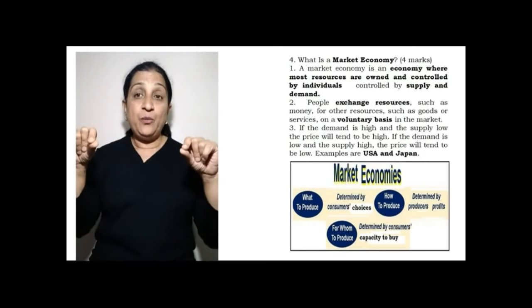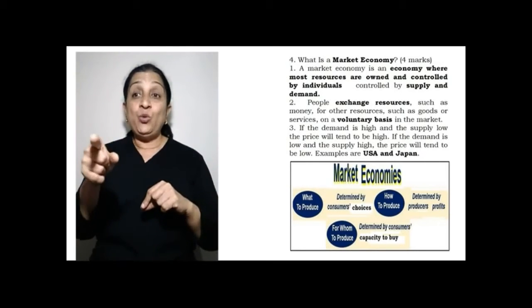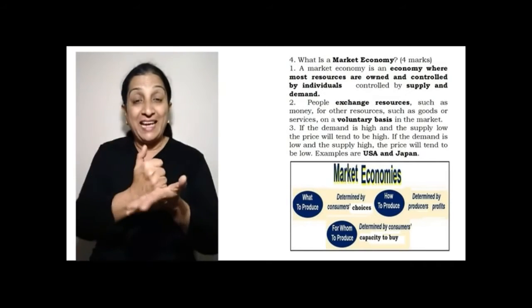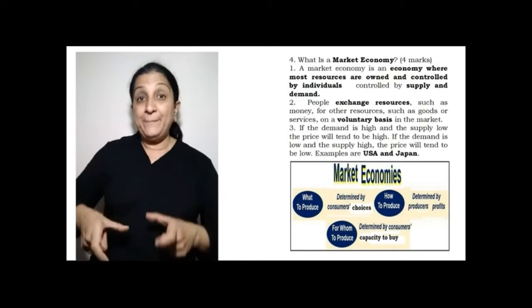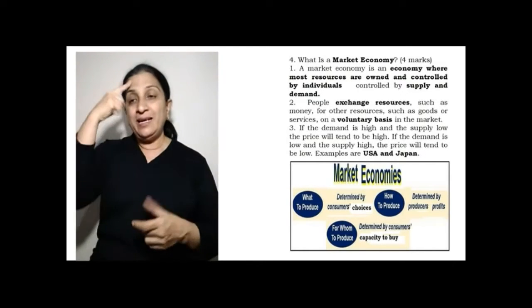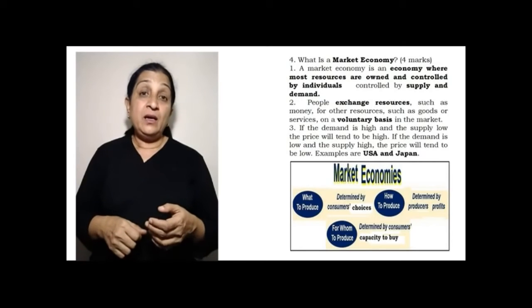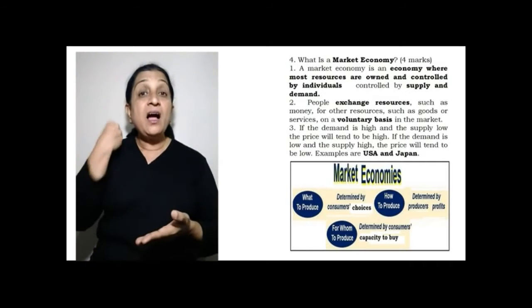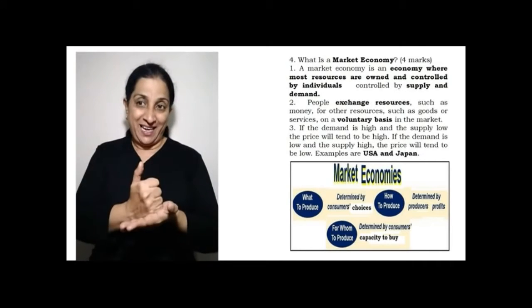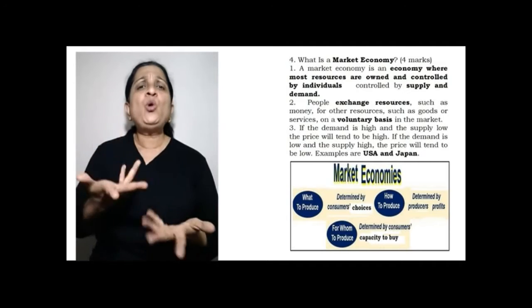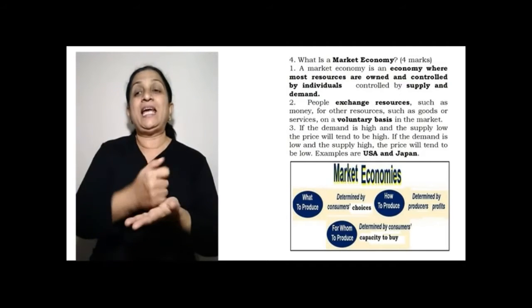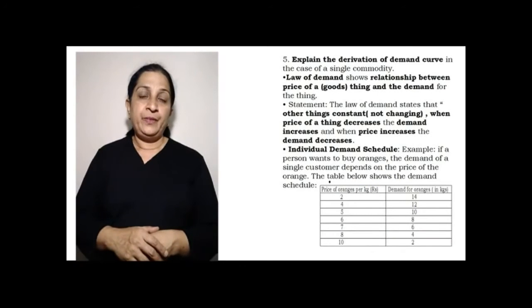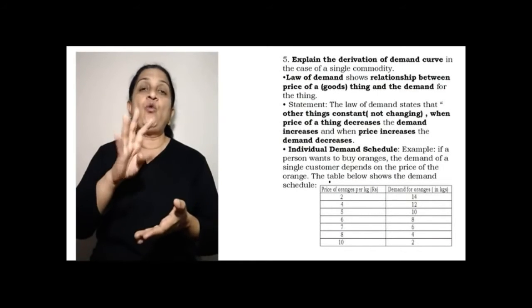Examples of this market economy are America and Japan. If you see in this slide, you have a table where it is explained. What to produce is decided by the consumer. How to produce is again decided by the consumer. For whom to produce is also decided by the consumer.